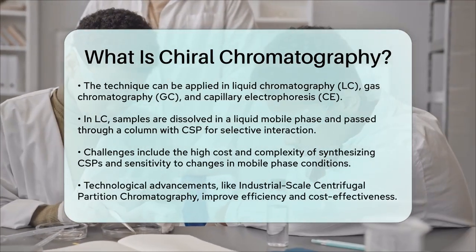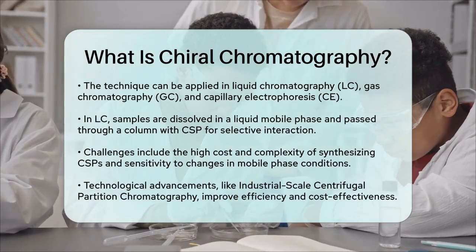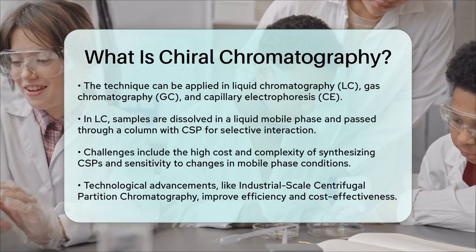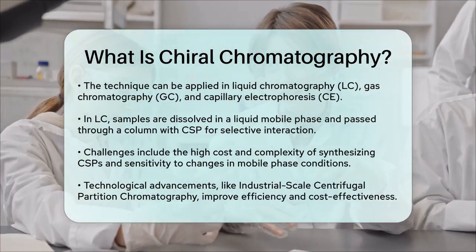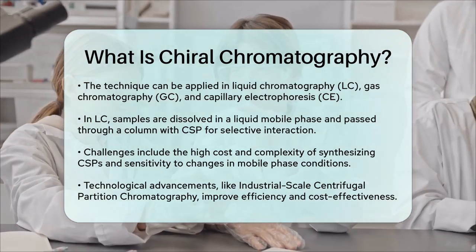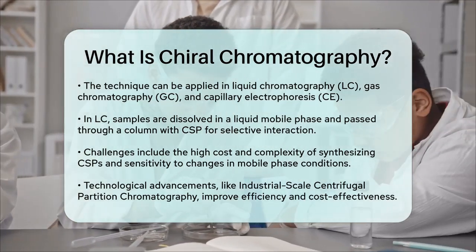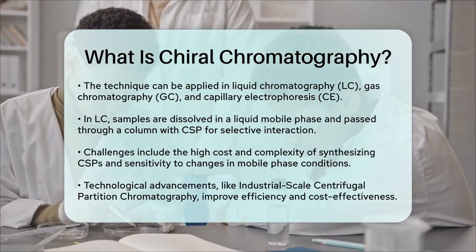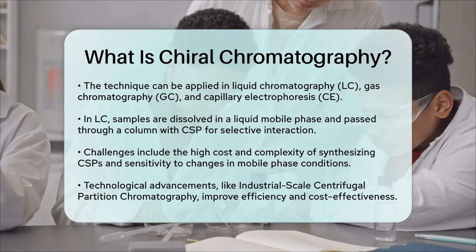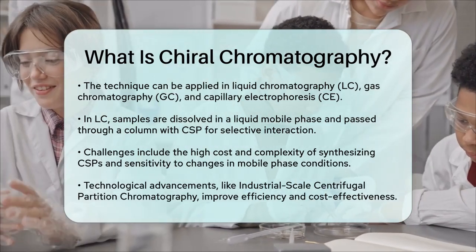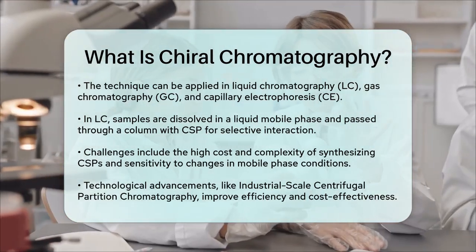While chiral chromatography is powerful, it also comes with some challenges. The chiral stationary phases can be expensive and complex to synthesize, and small changes in the mobile phase or column conditions can affect the separation. However, advancements in technology, such as industrial-scale centrifugal partition chromatography, have made the process more efficient and cost-effective. In summary, chiral chromatography is a sophisticated tool that helps scientists separate and study chiral molecules, which is essential in many fields due to the unique properties and behaviors of these molecules.